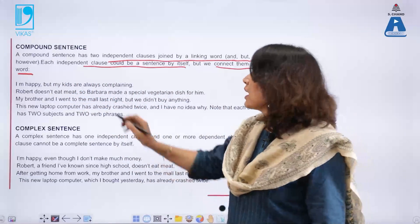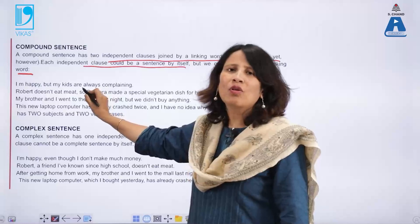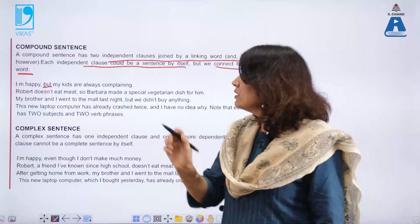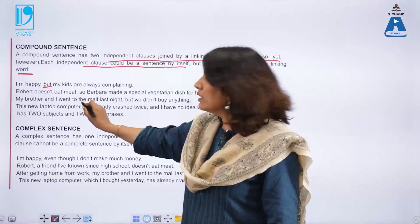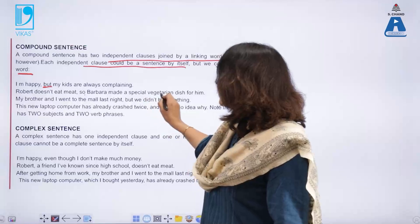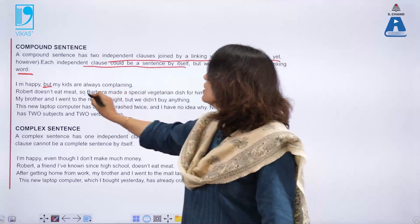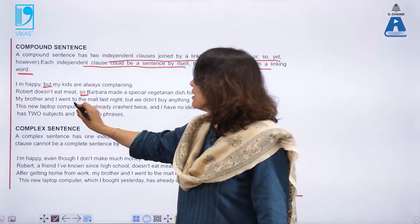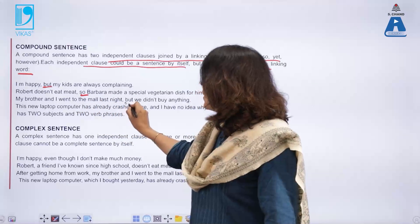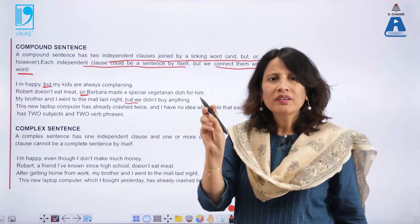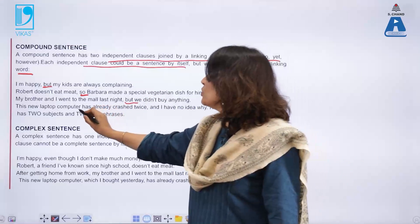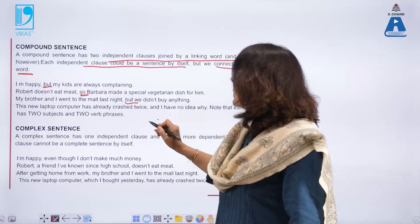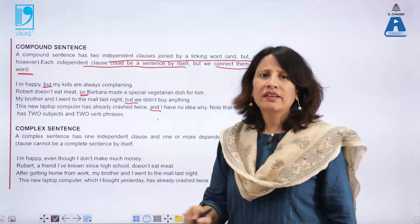For example: 'I am happy but my kids are always complaining.' Here 'but' is the connector. 'Robert does not eat meat, so Barbara made a special vegetarian dish for him.' 'So' is a connecting word. 'My brother and I went to the mall last night but we did not buy anything.' 'This new laptop computer has already crashed twice and I have no idea why.'